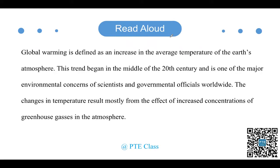接下来我们来看一下第一句话。'Global warming is defined as' — 这里 global warming，然后后面 is defined as，这个地方的连读，defined as 连到一块。然后 as 和后面的 an 放到一块，这个 an 可以弱化成 'uh' 的音，defined as an increase。increase 变成 an increase。然后：global warming is defined as an increase in the average temperature of the earth's atmosphere。